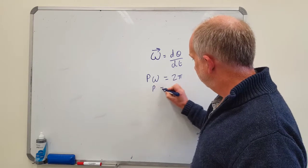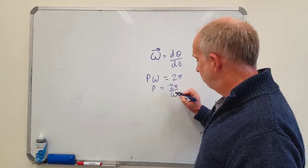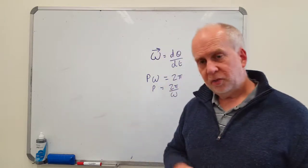So the period is equal to 2 pi over the angular velocity. That's the period.